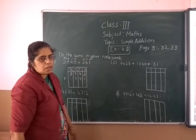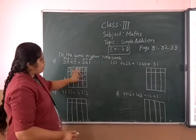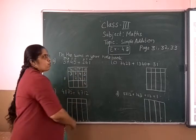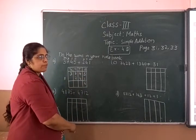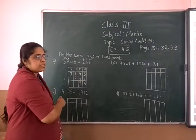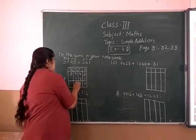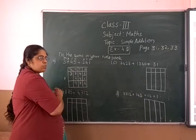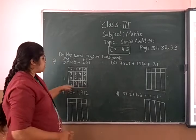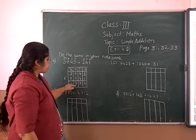Is there any number in the 1,000s place? No. Then put the line. Now you have to add. 5 plus 1 is 6. 4 plus 4: take 4 fingers, start counting after 4 — 5, 6, 7, 8. Then take 2 fingers, start counting after 7 — 8, 9. And here there is no number, so put 0. And 3 plus 0 is 3. The written answer is 3,986.